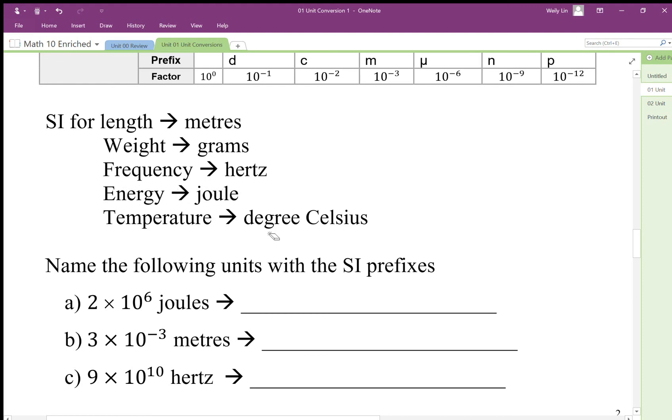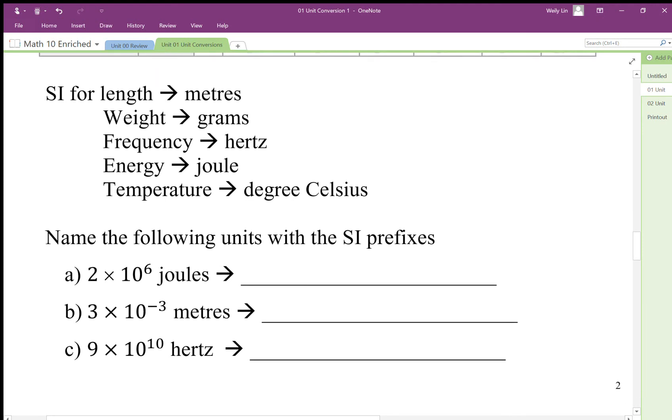For temperature we use Celsius instead of Fahrenheit. When we talk about naming these, in this case here we got 2 times 10 to the 6 joules. The SI prefix we're going to add is mega.